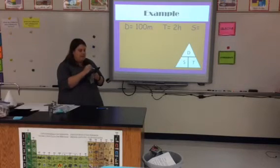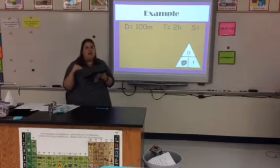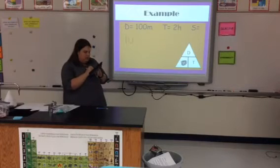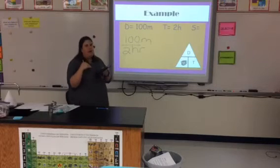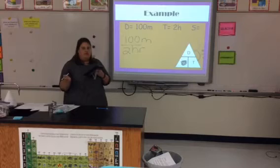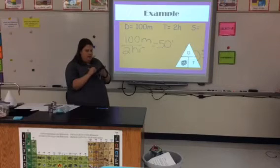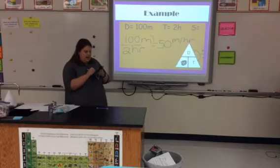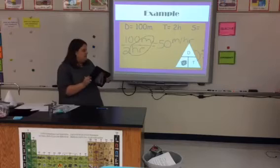In this case, I am missing speed, so I cover up speed on the triangle. That tells me I need distance and time. My distance is 100 meters, and I put that over my time of two hours. Because distance is on top of time, I know I'm going to divide. When I divide those out, I get 50, and my unit of measurement is meters per hour — because the setup shows meters over hours.